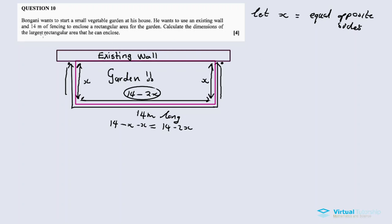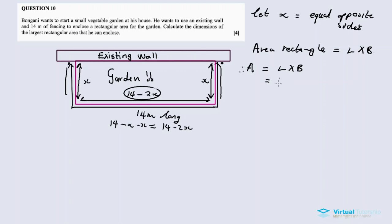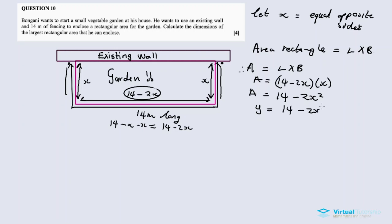We know that the area of a rectangle equals length times breadth. The length is the longest side, which is 14 minus 2x, and the breadth is x. Multiplying gives us 14x minus 2x squared. So the area A equals 14x minus 2x squared, or equivalently y equals 14x minus 2x squared. We now have a quadratic equation.